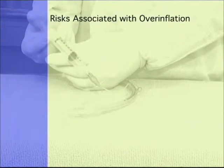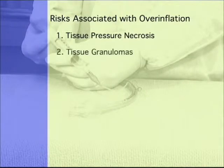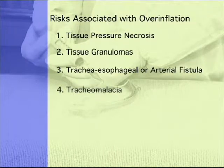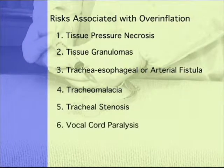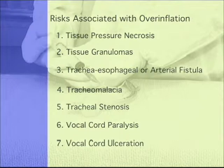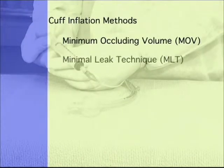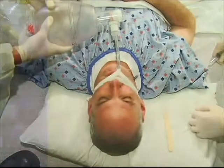These risks include: tissue pressure necrosis, tissue granulomas, tracheoesophageal or arterial fistula, tracheomalacia, tracheal stenosis, vocal cord paralysis, and vocal cord ulceration. The minimum occluding volume and minimal leak technique are two cuff inflation methods which are intended to minimize these risks.